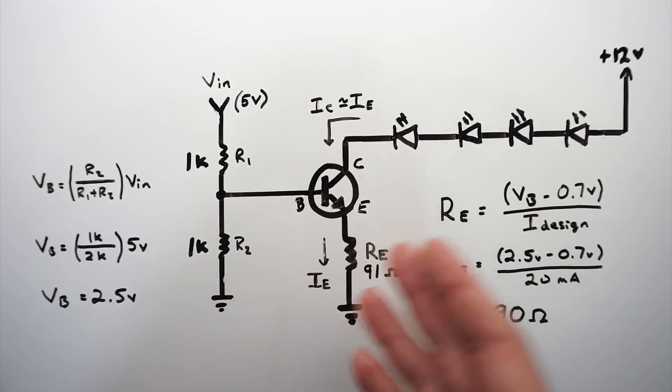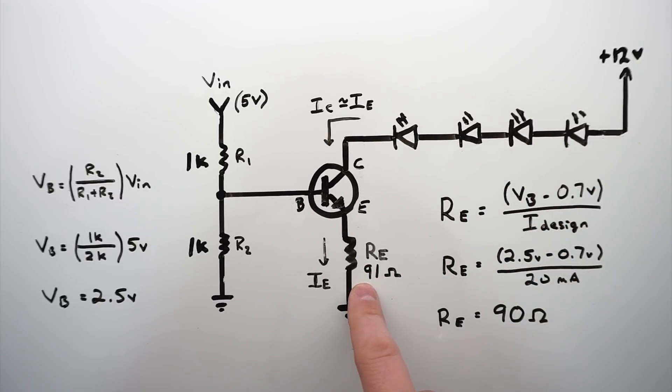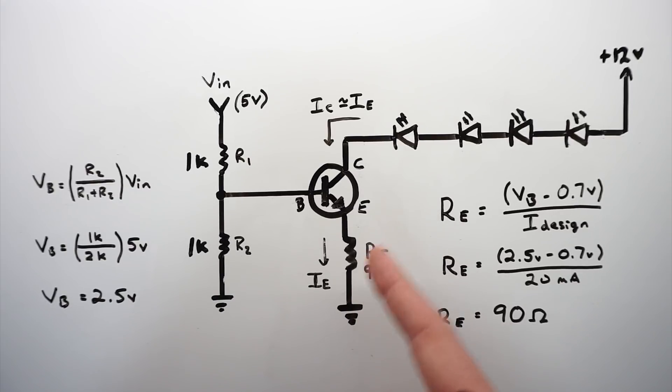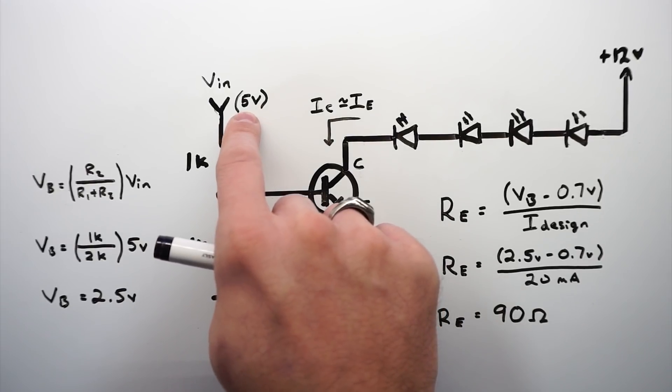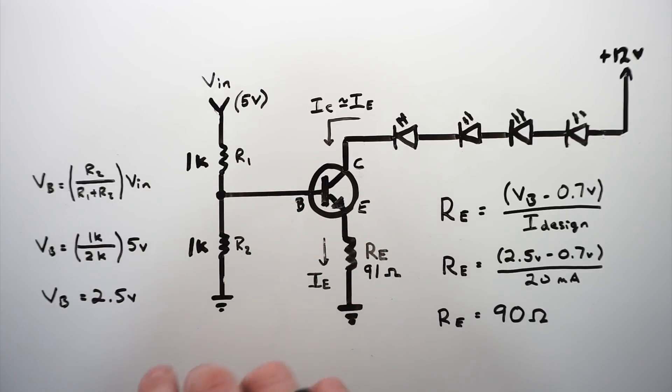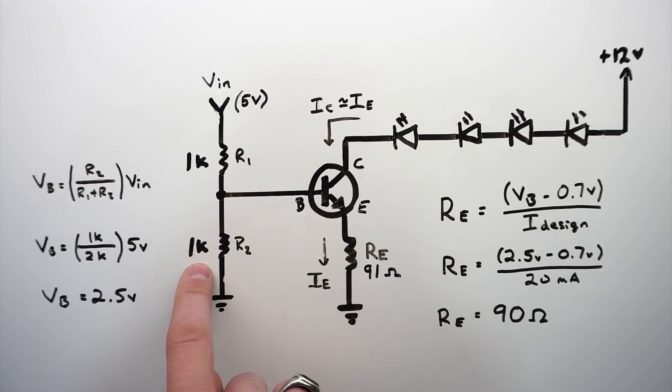Now we need to bias this transistor in such a way that we can develop 20 milliamps flowing through this collector-emitter junction. And we do that by setting up a voltage at the emitter resistor using Ohm's law to allow a certain amount of current to flow. So to get a certain voltage across this resistor, we have to develop a certain voltage at the base that is 0.7 volts higher than the emitter. Let's go through these equations. I know it looks a little scary.